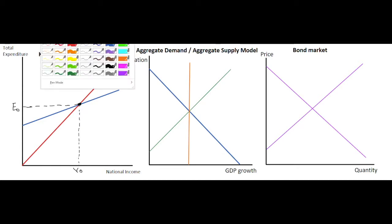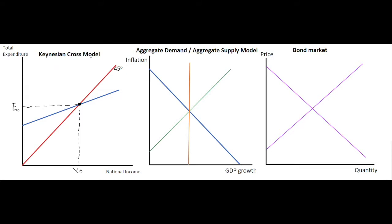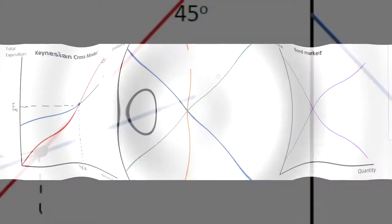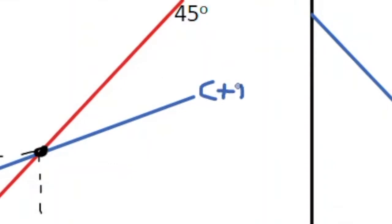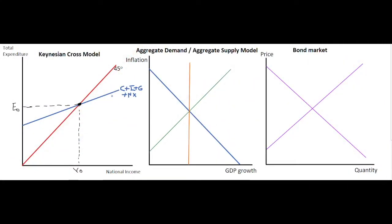We are looking at the Keynesian cross initially. The Keynesian cross model has total expenditure on the y-axis and national income on the x-axis. The 45-degree line shows perfect symmetry between total spending and national income, and we know that actual spending diverges from this somewhat. Actual spending is made up of consumption plus investment plus government spending plus net exports, represented along the expenditure line.